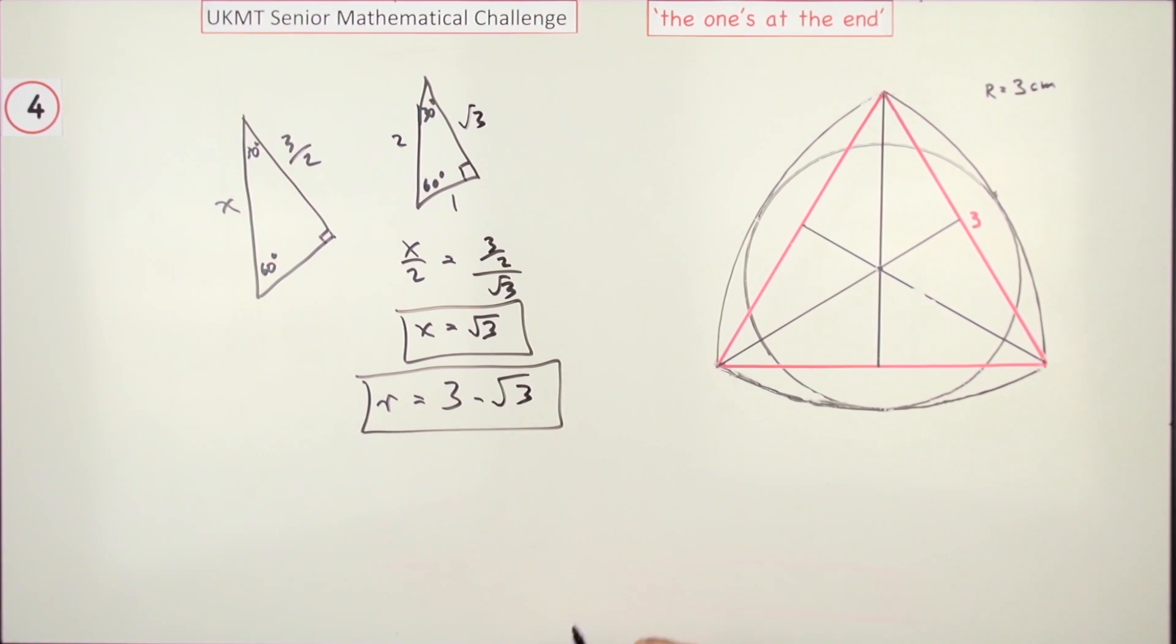Then, as before, the area is going to be πr², π times (3 - √3)², which was that 6π times (2 - √3).